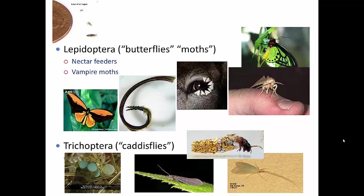The larval stages are found in lakes, rivers, and streams, and they are very important components of the food web. A few members in New Zealand and Australia have larvae actually adapted to marine environments — these larvae will live in tidal pools. Very few insects are actually adapted to salt water, but Trichoptera can be.